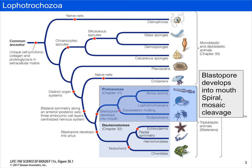Lofotrochozoans are part of the Bilateria, and the Bilateria includes two groups: the protostomes and the deuterostomes. The protostomes are highlighted here, and we can see that the Lofotrochozoans are part of the protostomes, which means that they have a blastopore that develops into a mouth and spiral mosaic cleavage.